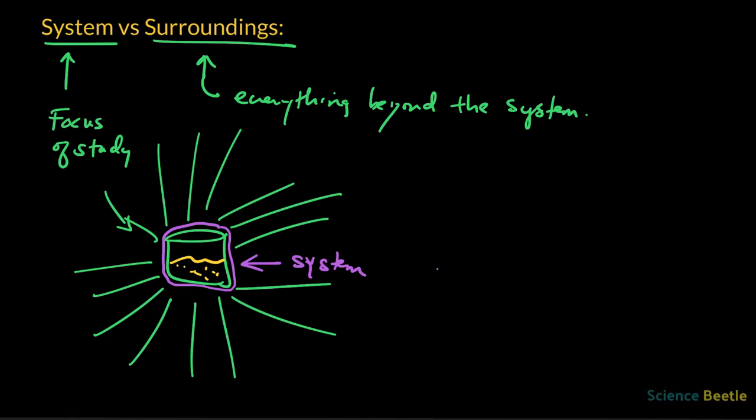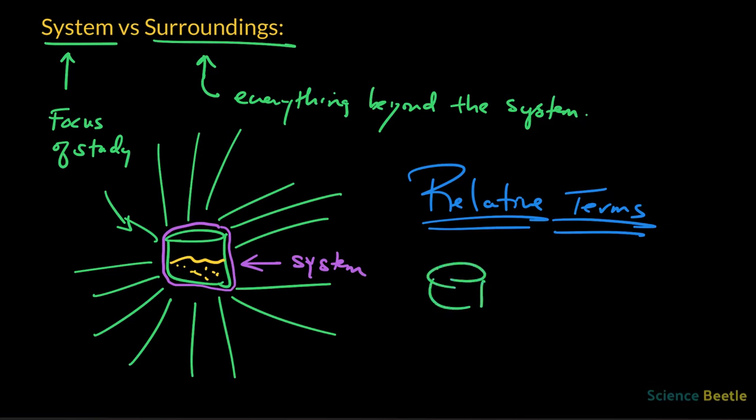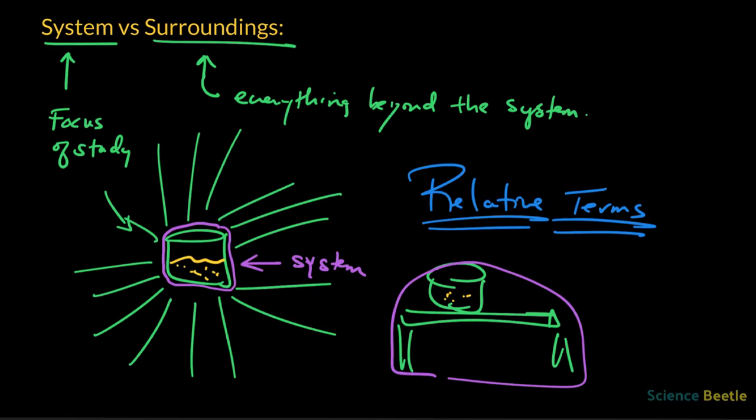Now whenever we talk about system and surroundings, remember that this is relative. We got to make sure that we understand these are relative terms. The system could include not only the little jar with material inside it, but maybe it also includes the table that it's sitting on. Maybe that's the system.